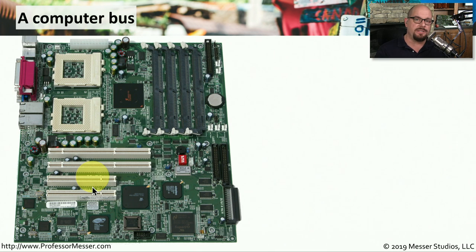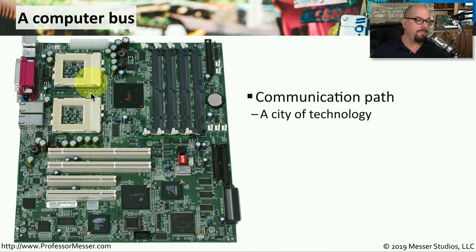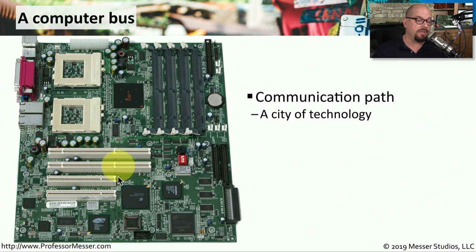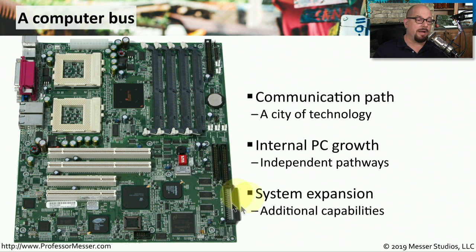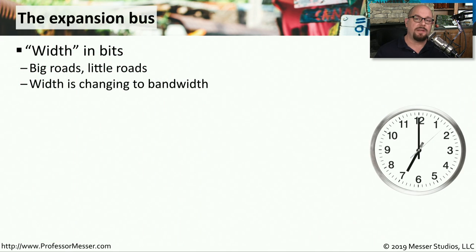We do that through a series of buses on the motherboard. There might be a data bus that sends information from your CPU to your memory, or a different computer bus connecting your memory to the expansion slots. This allows you to extend the functionality of your motherboard — add new memory to memory slots, add an additional video card or other interfaces using the expansion slots. Those expansion slots use an expansion bus to connect those components to the rest of the motherboard.